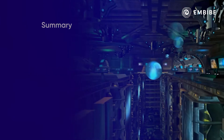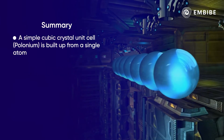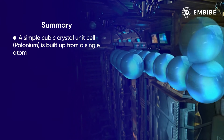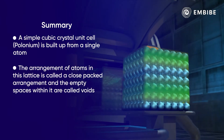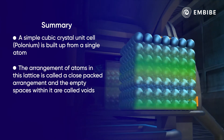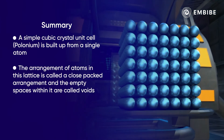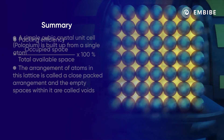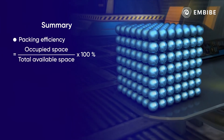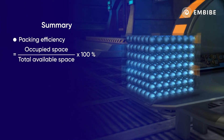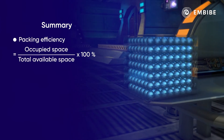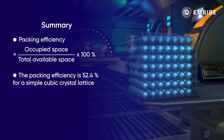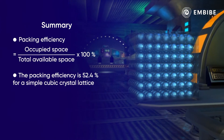We have studied how a simple cubic crystal unit cell like that of polonium is built up from a single atom. The arrangement of atoms in this lattice is called a close packed arrangement and the empty spaces within it are called voids. The packing efficiency is the ratio of the occupied space to the total available space in a crystal lattice, and it is found to be 52.4% for a simple cubic crystal lattice.